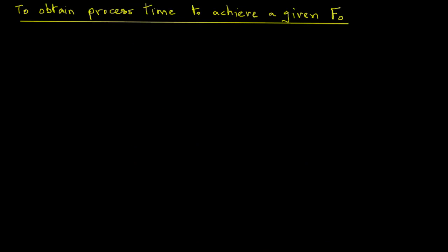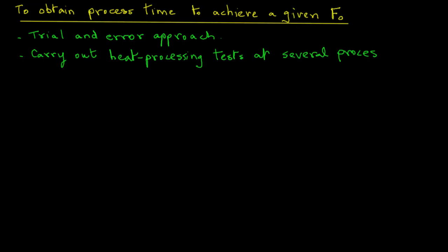In the spreadsheet example, we saw how to calculate the F0 value of a process. But what if we were given an F0 value and we want to obtain the process time? The procedure involves a trial and error approach. We will carry out experimentally various heat processing tests at several process times. By process time, here we refer to when the heating is stopped and cooling begins. We will then determine the F0 values for each of those tests.